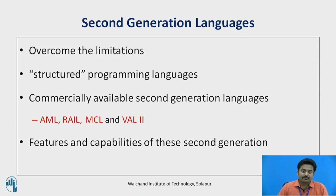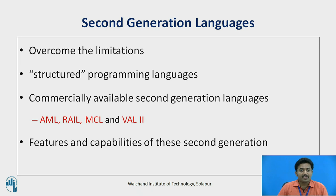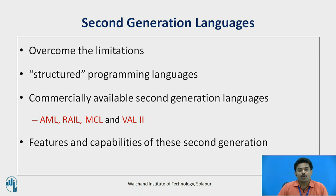Second generation languages overcome many of the limitations of the first generation languages and add to their capabilities by incorporating features that make the robot seem more intelligent. These languages have been called structured programming languages because they possess structured control constructs used in computer programming languages. Commercially available second generation languages include AML, RAIL, MCL, and VAL2.